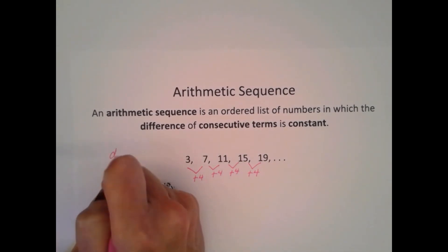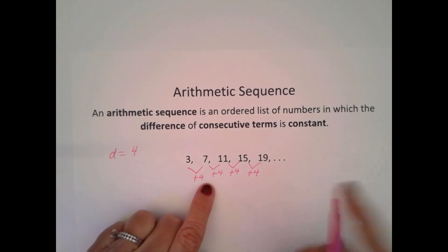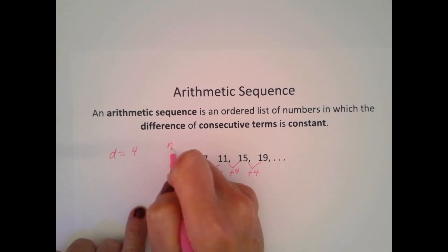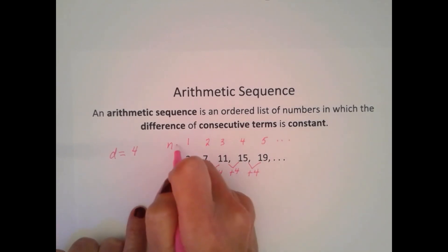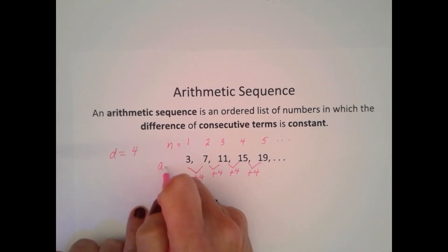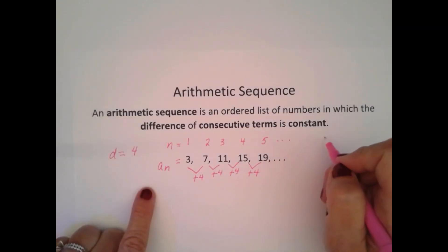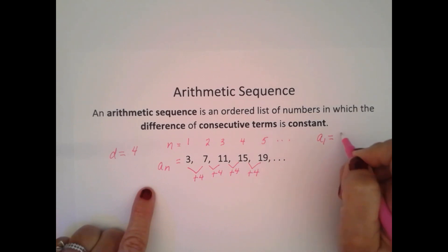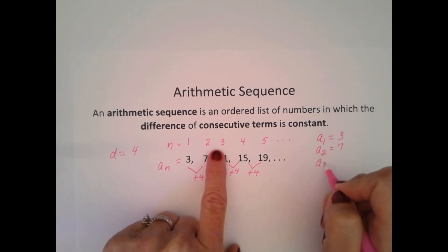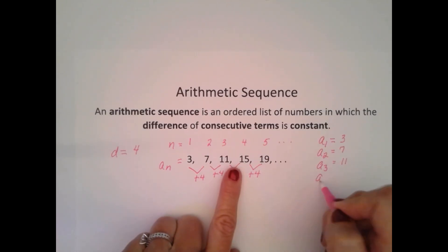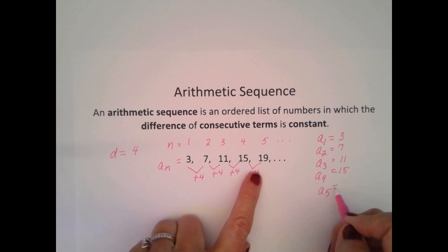My difference is 4. We write a sequence in subscript form. The number of my terms — this is the first term, second, third, fourth, fifth, and so on. These are my values, A sub n. A sub 1 is equal to 3, A sub 2 is equal to 7, A sub 3 is equal to 11, A sub 4 is equal to 15, A sub 5 is equal to 19.